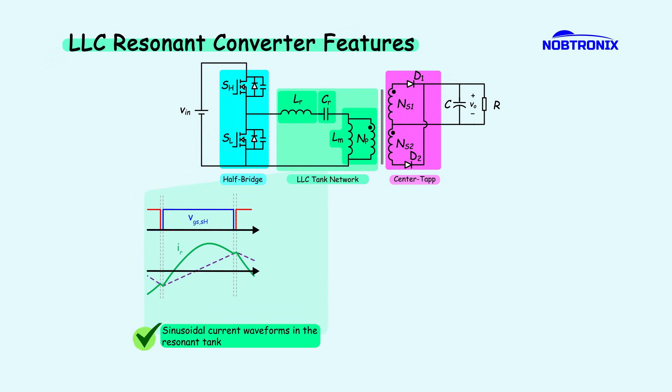Due to the resonant nature of the circuit, the tank current exhibits a quasi-sinusoidal waveform rather than abrupt square wave transitions. This smooth current flow reduces high-frequency harmonics, leading to lower EMI and improved power quality.